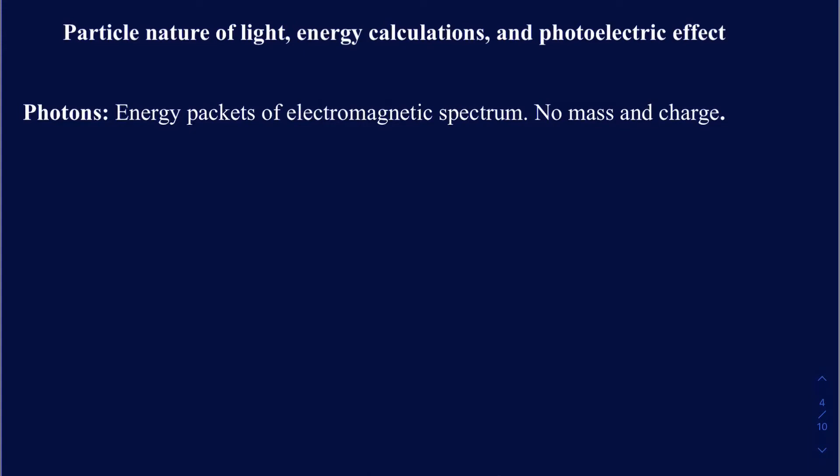In the electromagnetic spectrum, radiation carries energy in the form of energy packets, and those energy packets are actually called photons. Those photons don't have any mass or charge on them.